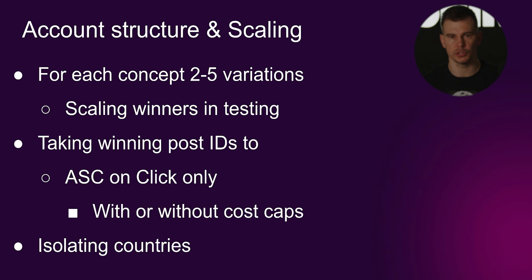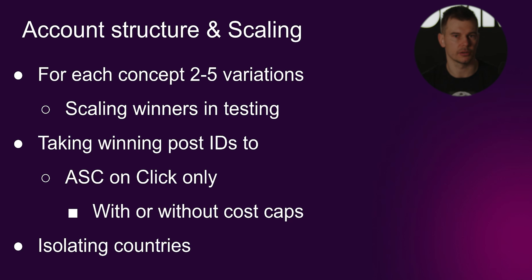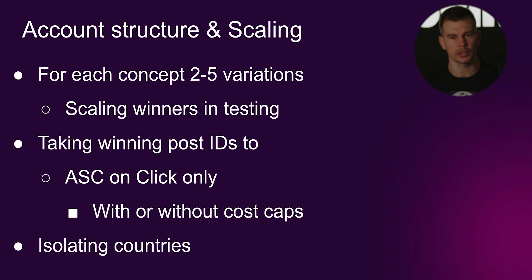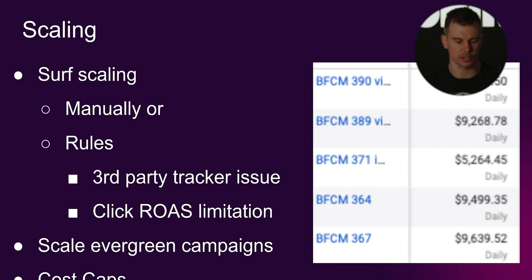For account structure and scaling: similar to evergreen campaigns, for each creative concept I want two to five different variations. I launch everything broad, with each ad set as a new test — everything as ABO — so I can scale whatever is working right away. Then I take the post ID and put it into Advantage Shopping+. I mostly run on click during Black Friday because I want people to act now and I don't want Facebook attributing too many view conversions it's not responsible for. I probably run it with cost caps — that's what I saw success with last year — but only in scaling, not in testing, because I can't predict performance. If you notice certain countries in Advantage Shopping+ or your regular campaigns are not getting spend but are getting high returns, isolate those countries into single ad sets to amplify what's working.